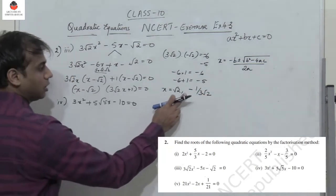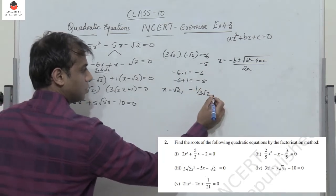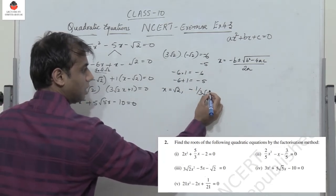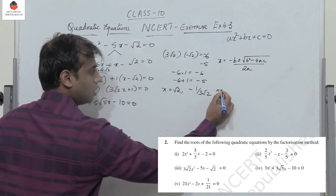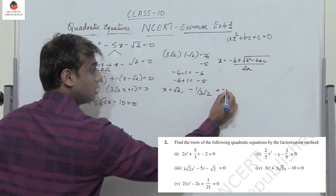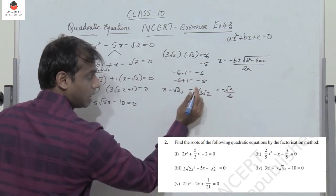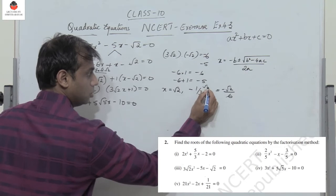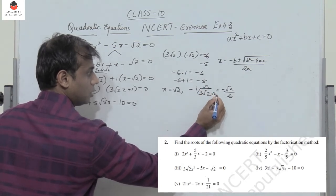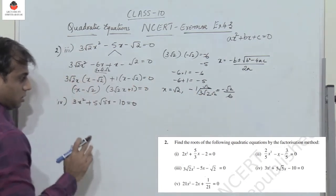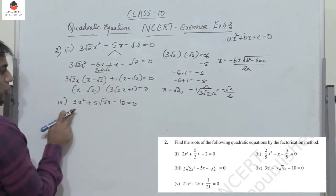One of the roots is minus 1 by 3√2. To rationalize, multiply and divide by √2, giving minus √2 by 6. So the rationalized form of that root is minus √2/6.